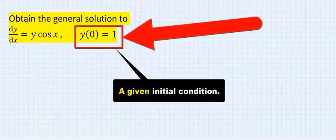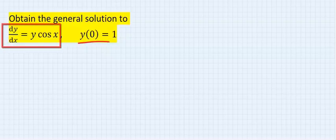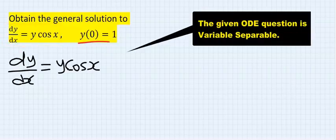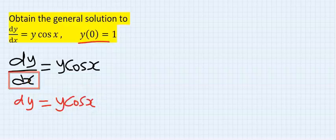Here we have an initial condition. Step number one: write out the given function. Step number two: separate the variables. Hence my dy will be here, and I've got y plus x. I will move this dx over to the other side.